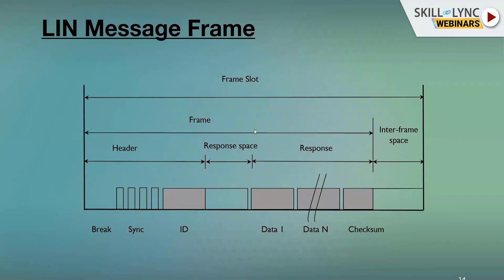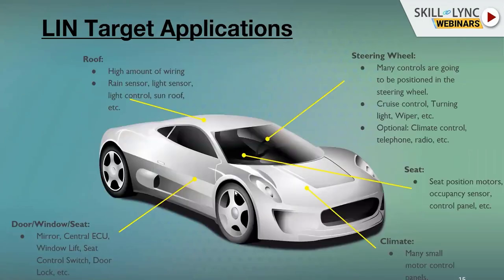After the header, the master decides whether to send a response or to ask the slave to respond. Depending on the header, the data will follow. The LIN message frame consists of sync, ID, data, and checksum. The checksum verifies data integrity — if the data is not corrupted it is good, if corrupted it is bad.